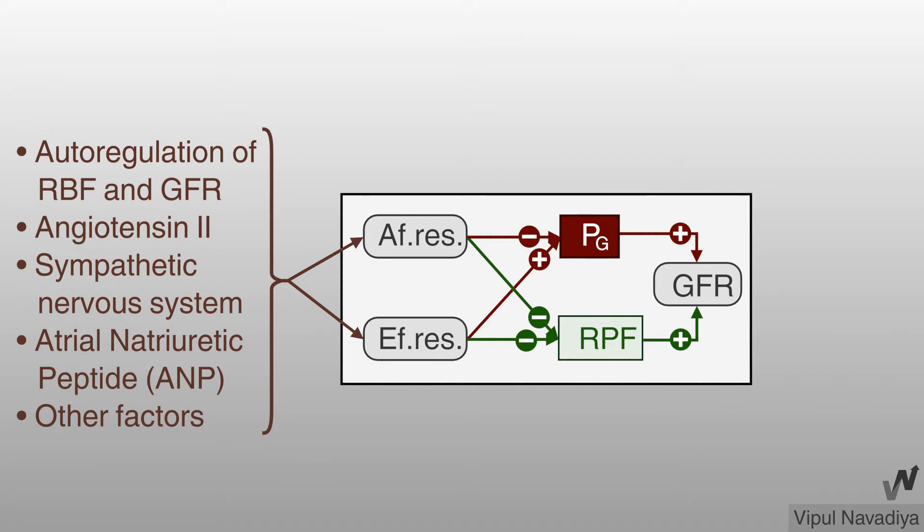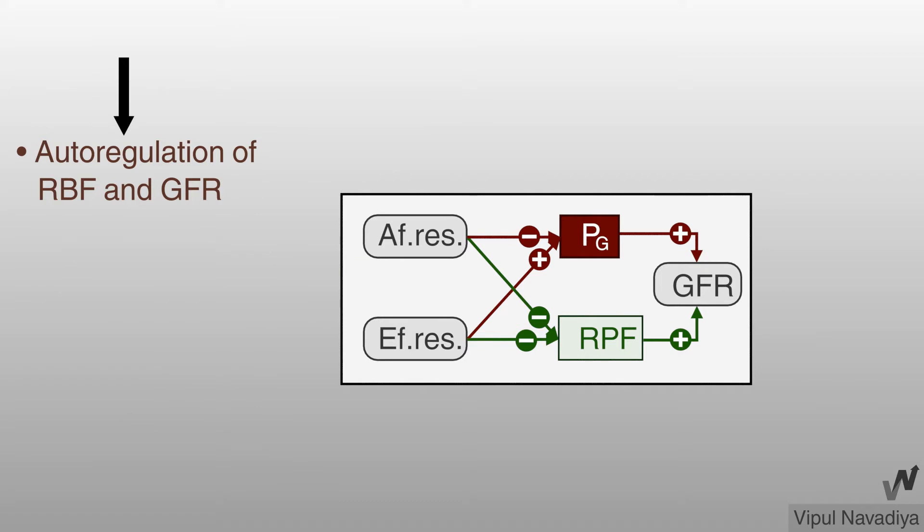These include autoregulation of renal blood flow and GFR, angiotensin II, sympathetic activation, atrial natriuretic peptide and some other factors. First of all let's talk about autoregulation.